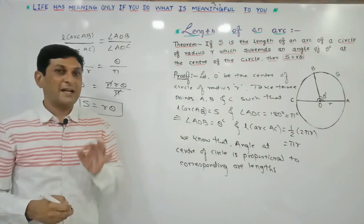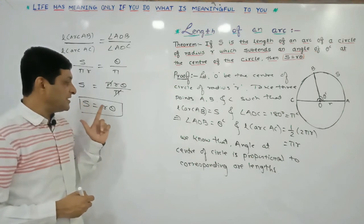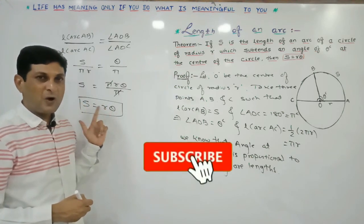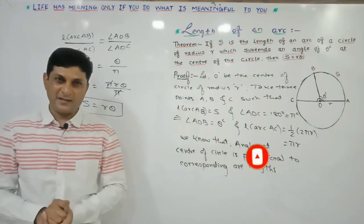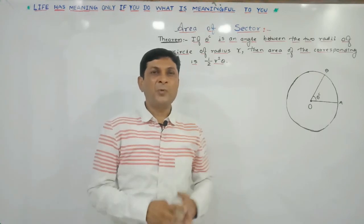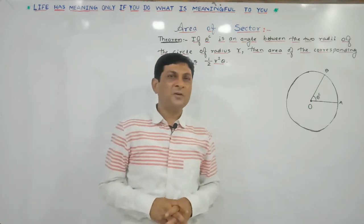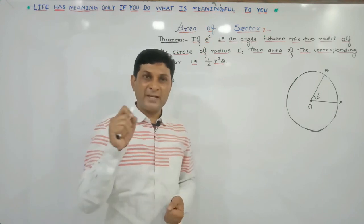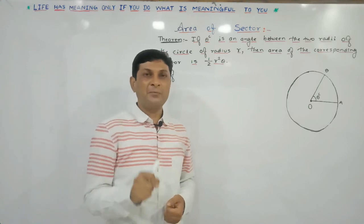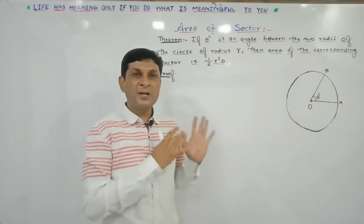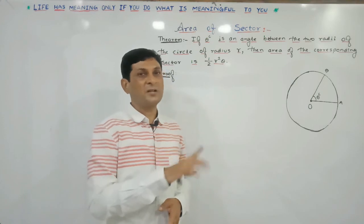Applying this formula S equals R theta, we are able to find the length of arc. This formula is applicable when the radius R and the angle theta subtended by the arc at the center are given. Now let us prove the second important formula to find the area of a sector. The formula from your earlier classes — area of sector equals theta over 360 times πR² — is applicable when the angle is in degrees.